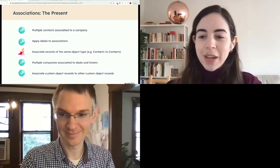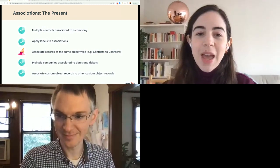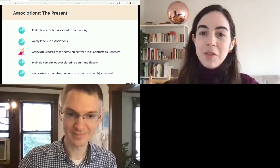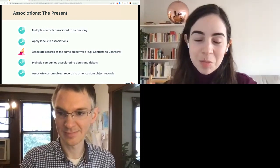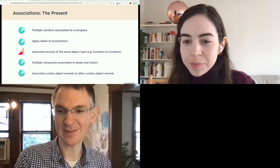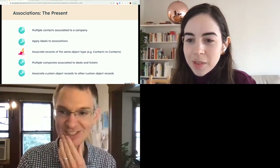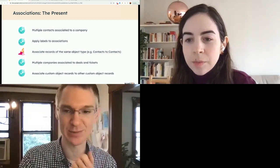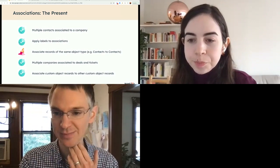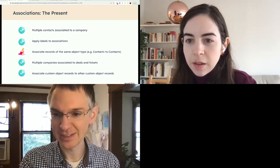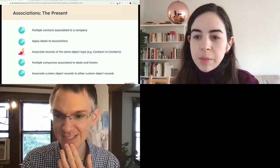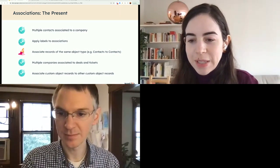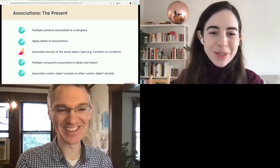I'll pause here in case anyone has comments or questions. I see a few in the chat — Matt has a 'former employee' label, which is interesting. Matthew has 'primary onboarding contact,' similar to what I mentioned but post-sale. And there are labels to define another company's influence on a deal. Contact labels seem to be really popular. I do see some comments about same object associations, so maybe we'll keep going to get to that more quickly.